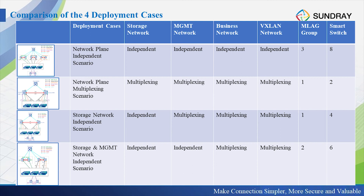For the first scenario — the network plane independent scenario — we use eight smart switches and form three MLAG groups. MLAG group one is used for the management network. MLAG group two is used for the business network. MLAG group three is used for the data communication VXLAN network. Another two switches are connected as the storage network. All four networks are independent because they connect to different groups.